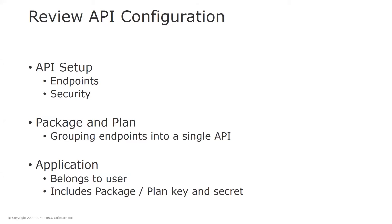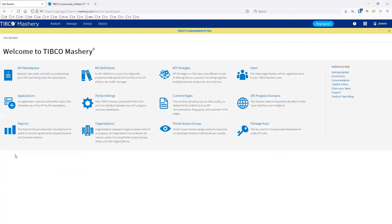We're going to have a quick review of the basic setups for APIs within Mashery. It's important to understand how the endpoints are configured and how the security is tied to each individual endpoint, as well as API-wide settings. We'll cover how packages and plans are created to group these endpoints into an API, and we'll look at how users get packages, plans, and keys via the applications.